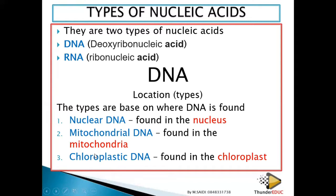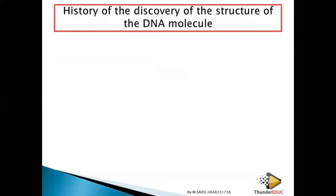In the exam, if asked to name two places where DNA is found in an animal cell, the answers are the nucleus and the mitochondria. Do not confuse the type of DNA with the location where it is found. This distinction was tested in the 2020 national exam. We will next look at how the DNA molecule was discovered.